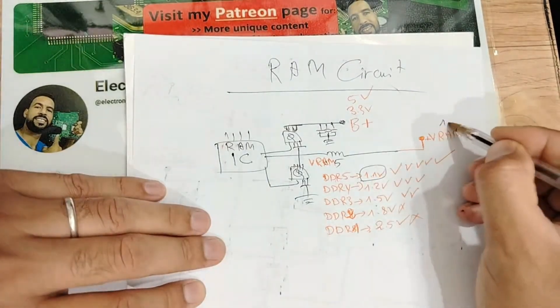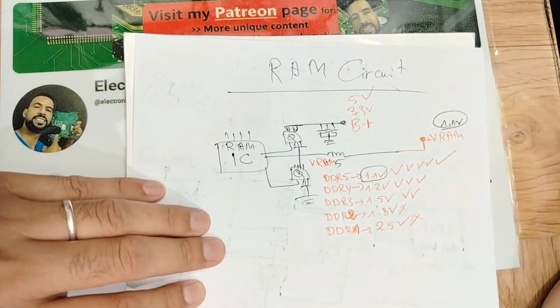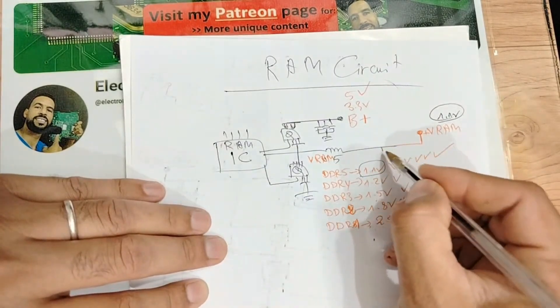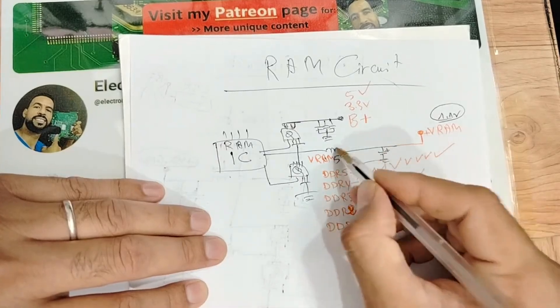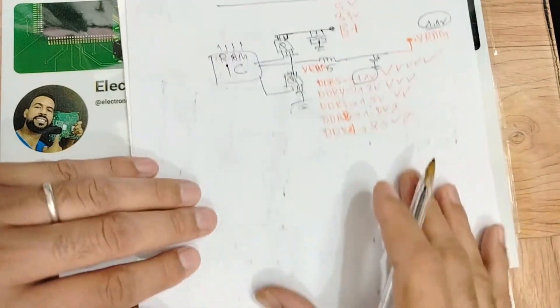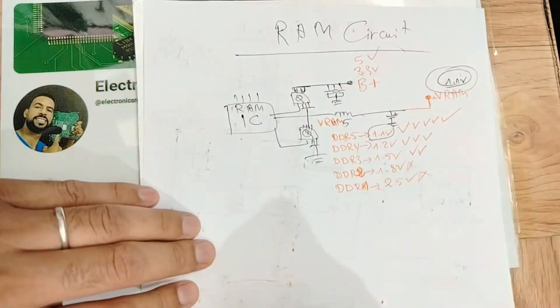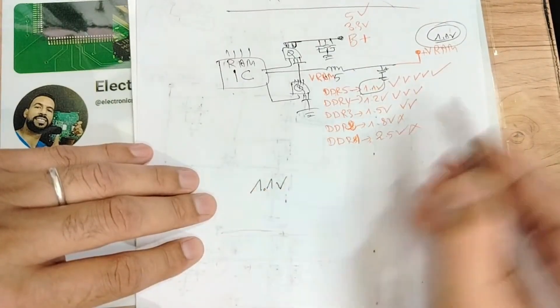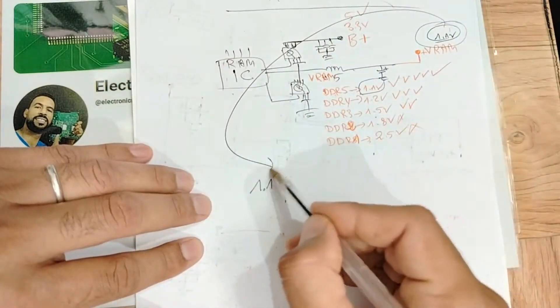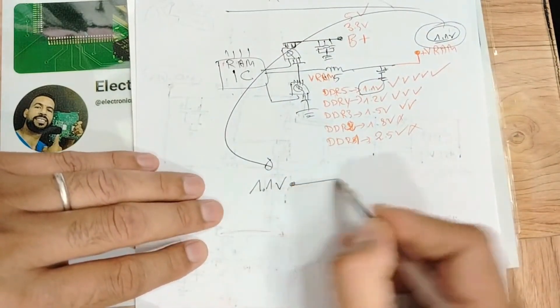If we say the RAM is for example DDR5, we will get here how much? 1.1 volts for the RAM. Of course here also we have capacitors, electric capacitors for filtering and inductor. But for the RAM this voltage, basically 1.1 volts here, this one my friend will be applied to another IC we call it divider.